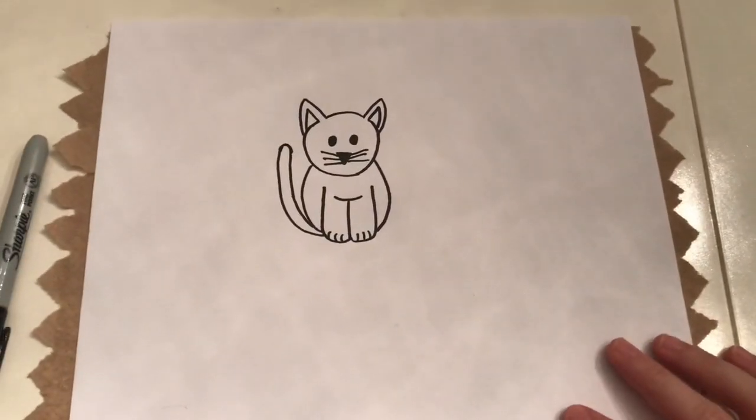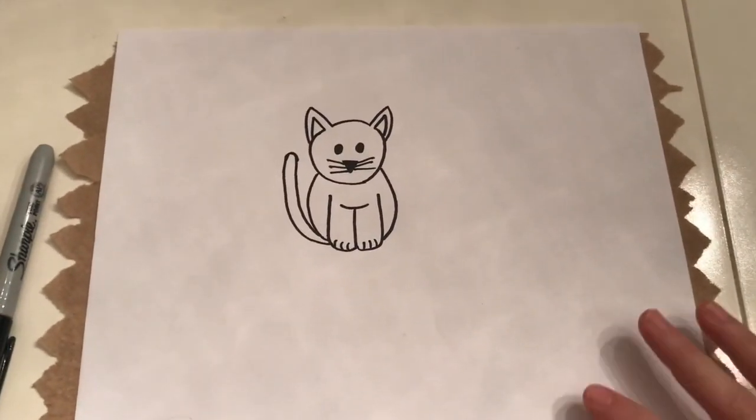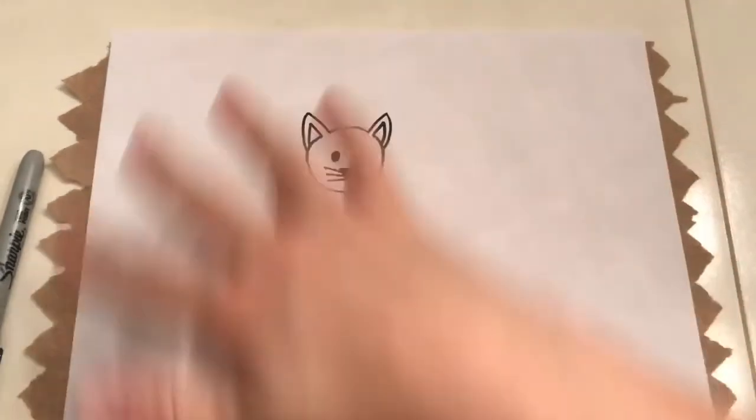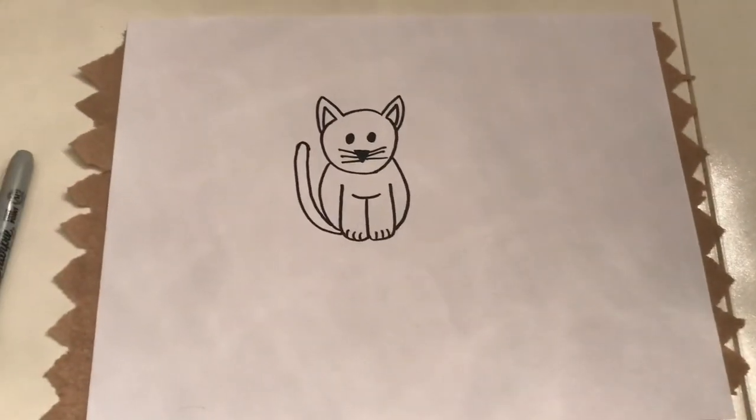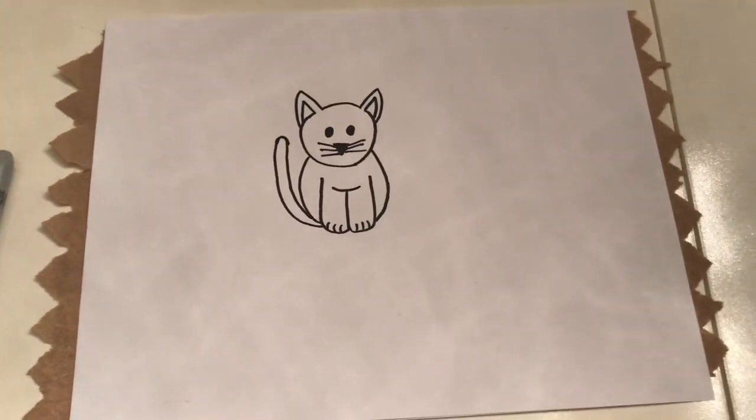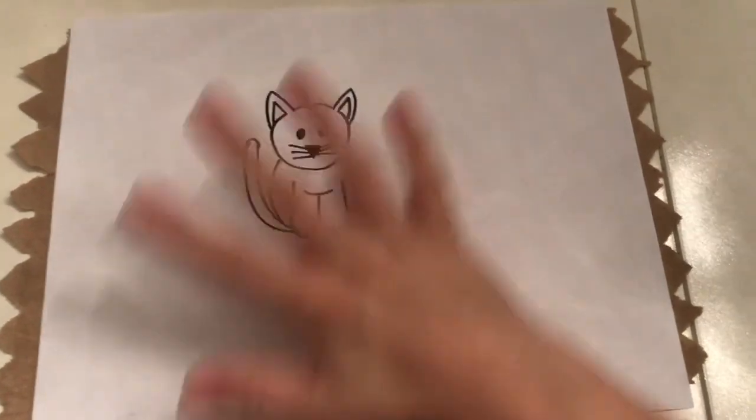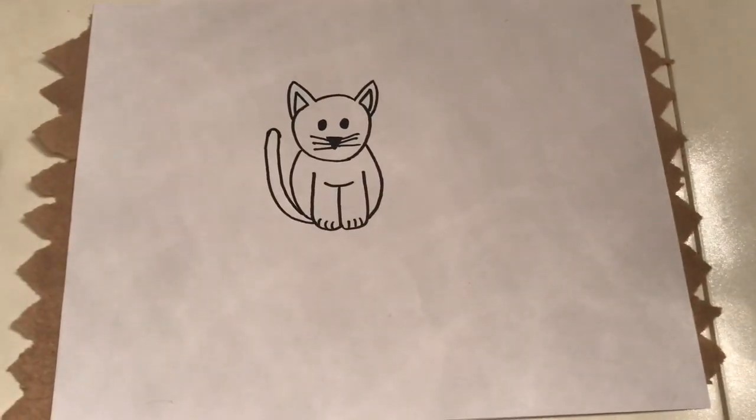Maybe you want your kitty to be outside and you could draw, I don't know, a pond and some trees in the background. Or maybe he's playing with some other kitties. Or maybe he's in the kitchen getting into trouble, finding some food. You choose what kind of scene you want to make for your cat. What would you do with your cat? How would that show it?